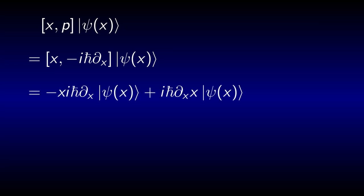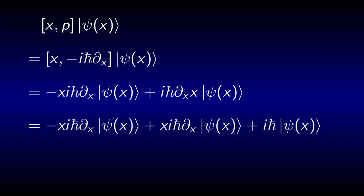The key point is that one of the terms you end up with now features the derivative of x times psi, both of which are x-dependent, so a product rule is needed. This gives us two new terms, one of which cancels out the first one, so that we are left with i h-bar psi.